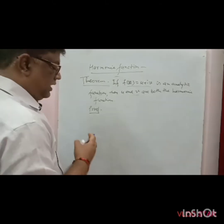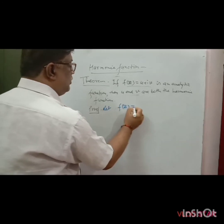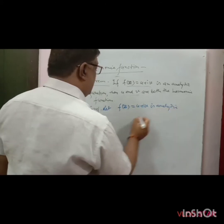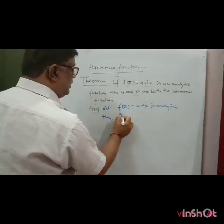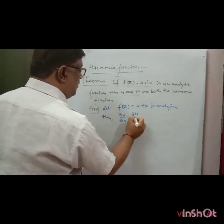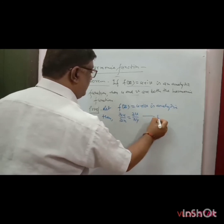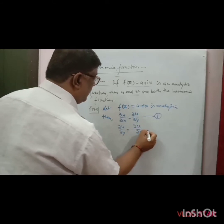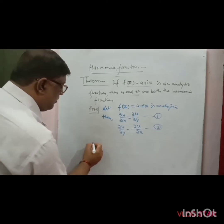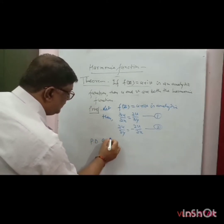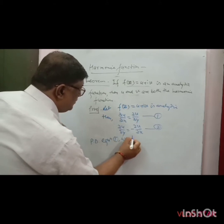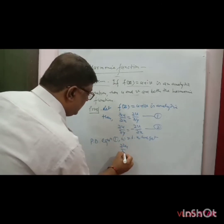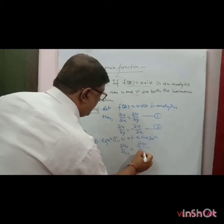Proof: Let f(z) = u + iv be an analytic function. Then it satisfies the Cauchy-Riemann equations: ∂u/∂x = ∂v/∂y — this is equation 1 — and ∂u/∂y = −∂v/∂x — this is equation 2. Now partially differentiate equation 1 with respect to x to get: ∂²u/∂x² = ∂²v/∂y∂x. This is equation 3.